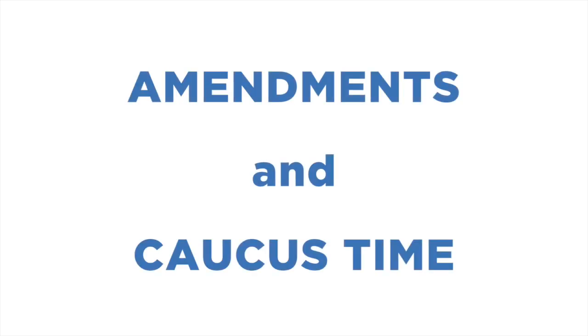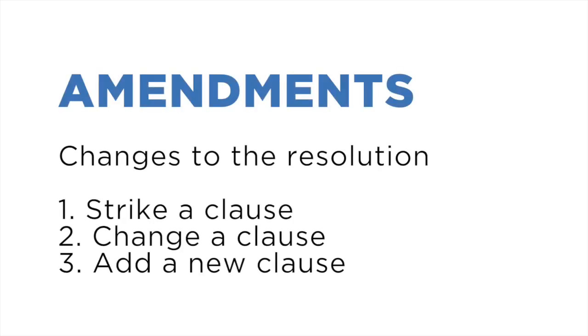Debate will go on like this — speakers for and against the resolution, with POIs following each speech and the option of yielding — but can be interrupted by two things. Amendments are proposed changes to the resolution. They can do three things: you can strike a clause entirely, change some of the words in a clause, or add a new clause to the end. Amendments form the most substantial part of debate. Delegates will now entertain an amendment proposed by Russia. Russia has proposed an amendment to clause three, which currently reads 'declares dabbing to be officially dead,' and Russia wants to strike this clause.